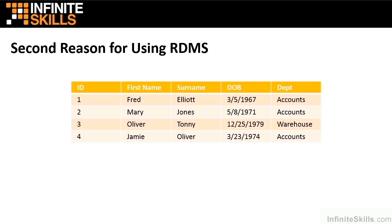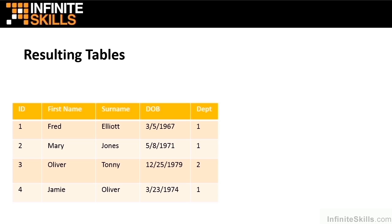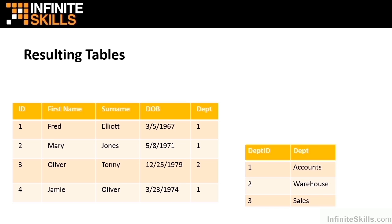We're only dealing with four records and three of them are repeated. There could be 4,000, 40,000, or 400,000 records, in which case that repetition becomes much bigger. So to save that repetition of data, we extract the department into its own table as well. In our parent's table, we replace the department text with an ID — a numerical number, which is much faster for querying than text values. The text values are entered as unique values in the department table, where accounts, warehouse, and sales are each given their own ID. That ID links through to the department column in the parent's table, so the words 'accounts', 'warehouse', and 'sales' each appear only once in the whole database system.